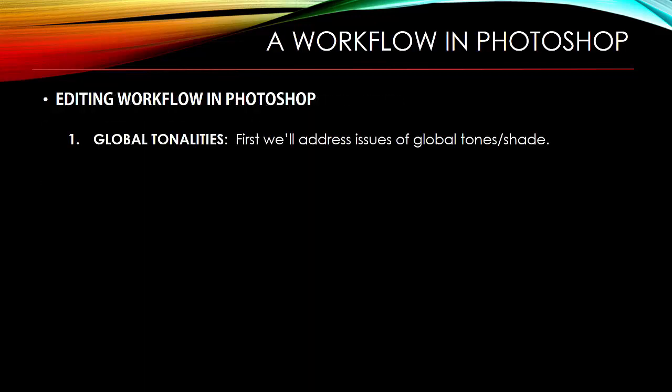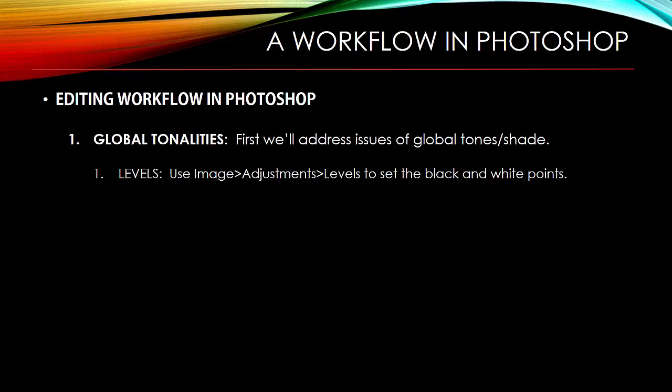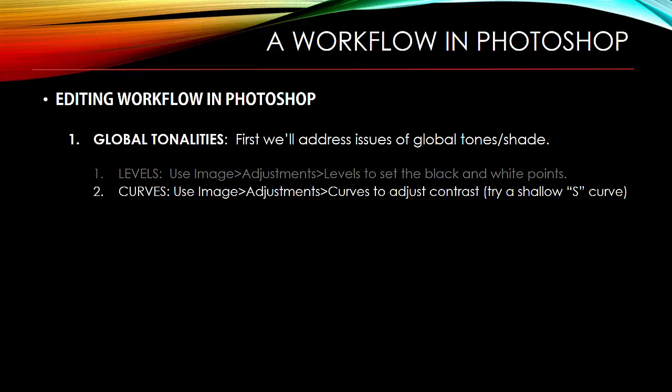Here's our highly recommended approach. First we're going to deal with tonalities — by that I mean tones or the shades of colors, the steps from black to white, independent of what the color is. First, open Image > Adjustment > Levels, and we're going to set the black and white points of our image based on where the actual end of the image tones is. Then we're going to open Curves — Image > Adjustment > Curves — to adjust contrast. You might try creating a shallow S-curve with that linear curve you see, and see what we get with that.